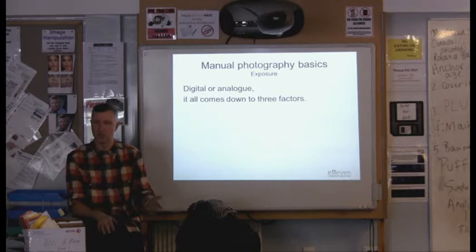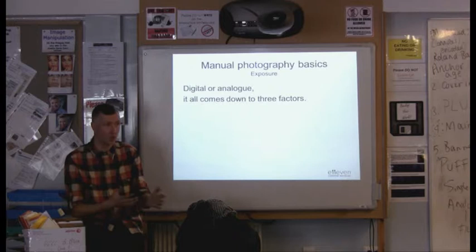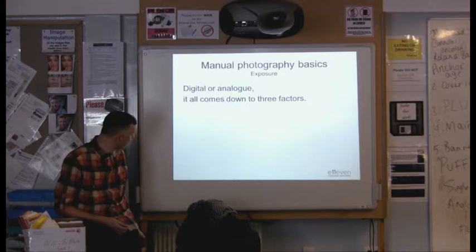The third one, if no one knows it, is maybe one that you don't consider so much, but it's film speed. The ISO setting on your camera is how fast the sensor on your camera - or if you're using analog photography - how fast the film absorbs light.